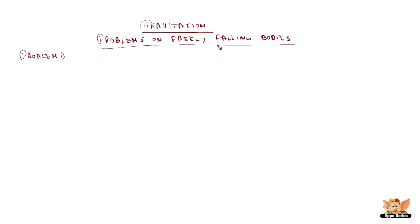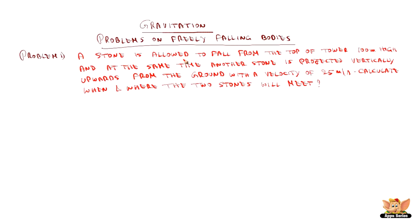Gravitation problems on freely falling bodies — Problem 1. A stone is allowed to fall from the top of a tower 100 meters high, and at the same time another stone is projected vertically upwards from the ground with a velocity of 25 meters per second. Calculate when and where the two stones will meet.